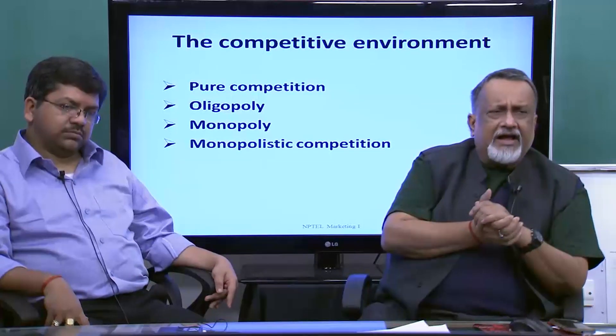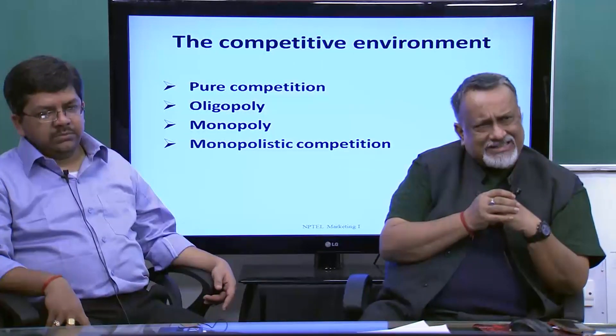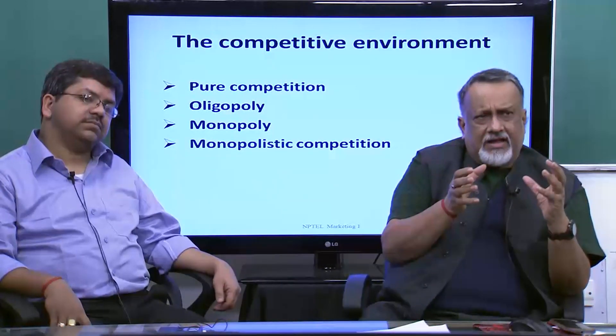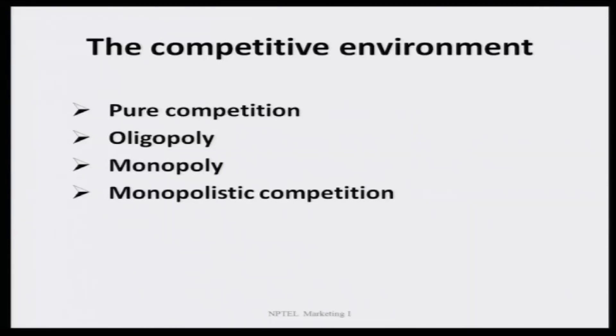Then we have monopoly, which today hardly exists except in state-controlled businesses — monopoly means there is only one company that dominates the entire market. Monopolistic competition is where there is controlled competition; there may be two companies, such as in state-controlled markets like electricity or coal, where two state units compete with each other. So it is not really pure competition; it is very controlled, limited competition. Most markets we will be discussing will usually have an oligopolistic structure.